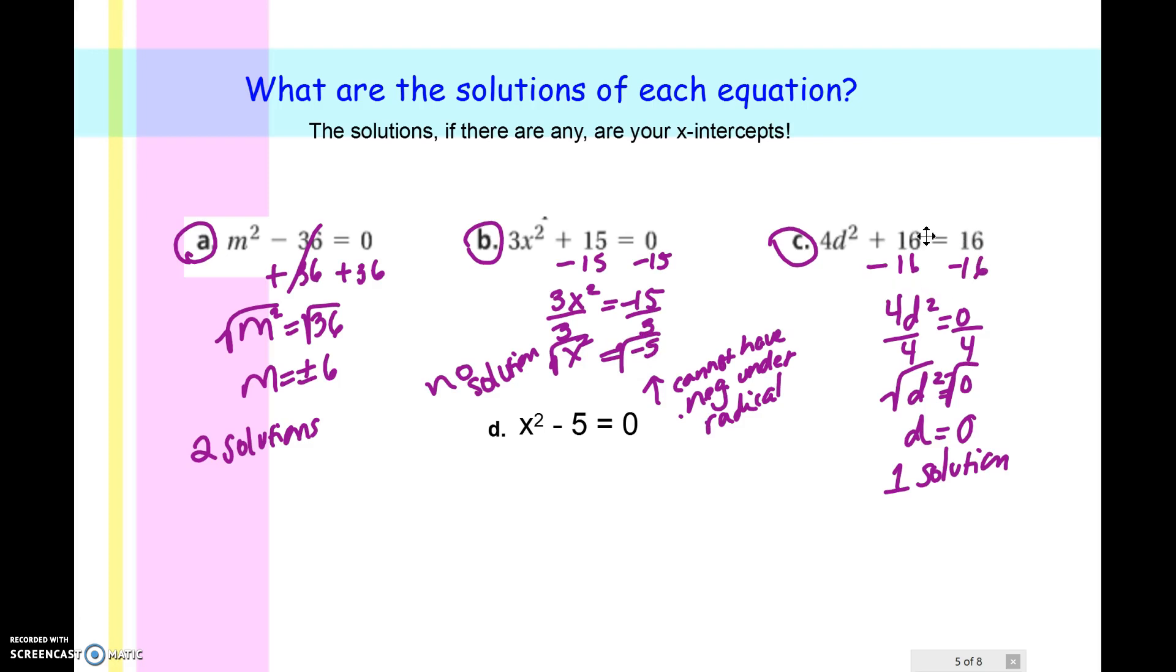On the last one, when you solved it, you ended up with 0 over 4, which is 0. So d squared equals 0. Take the square root. Well, the square root of 0 is 0, because 0 times 0 is 0. But you don't have a positive or negative 0. So this would be an example of one solution. So in this case, my intercept is 0, 0. So my vertex is my intercept, which is why I only have one solution. It's on the axis.